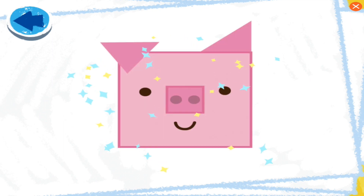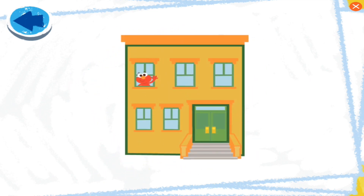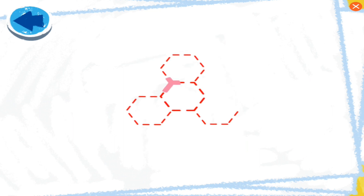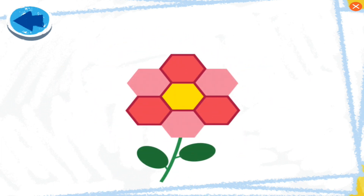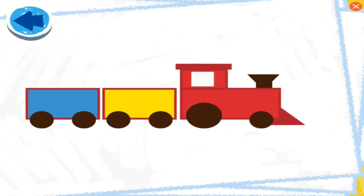This picture has squares! Boy, Elmo wonders what it is. Oh, Elmo sees it's a piggy face! This picture has rectangles! Boy, Elmo wonders what it is. Hey, it's Elmo's building! This picture has hexagons! Boy, Elmo wonders what it is. So pretty. This picture has rectangles! Boy, Elmo wonders what it is. Boy, Elmo can't wait to see what it is. Oh boy, it's a train!